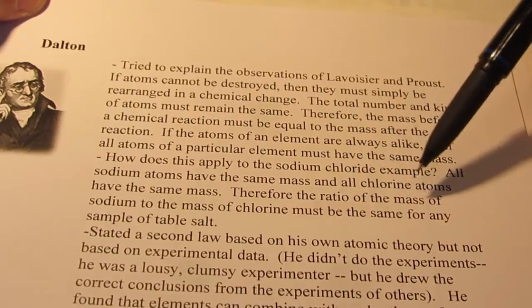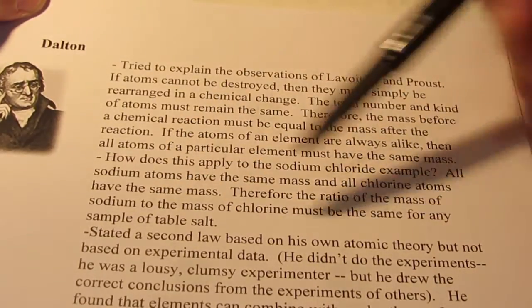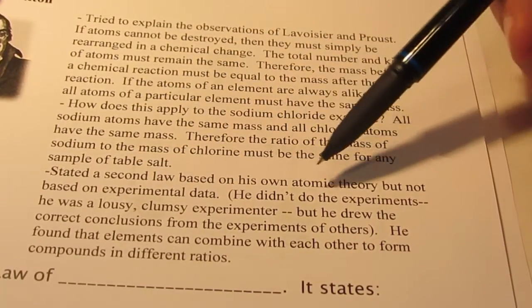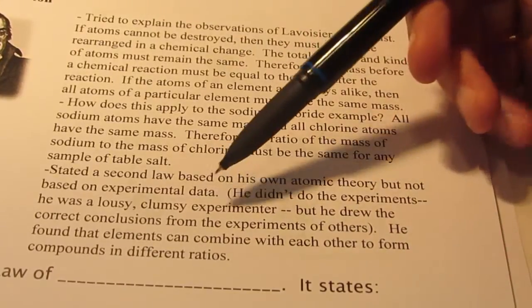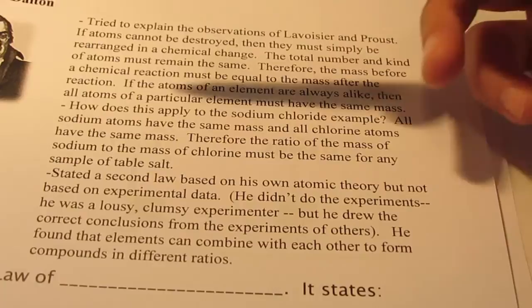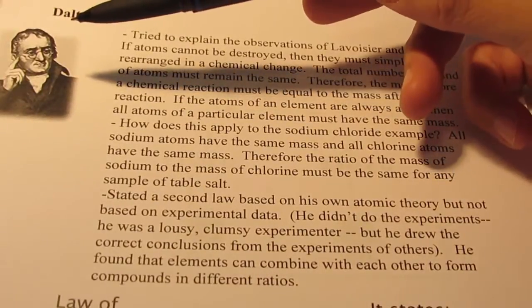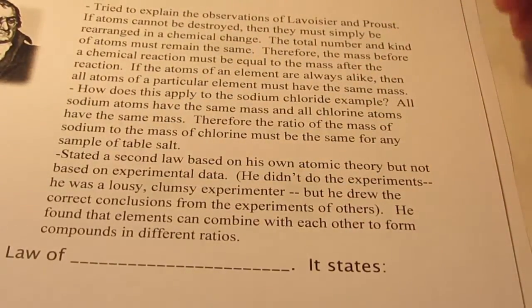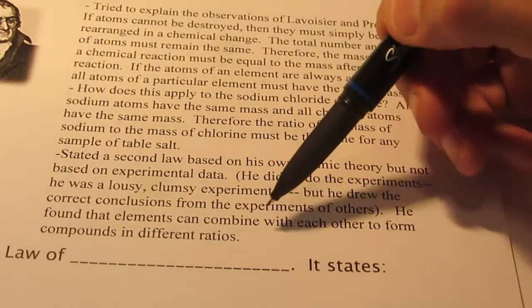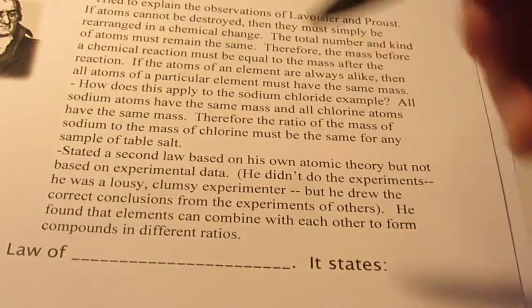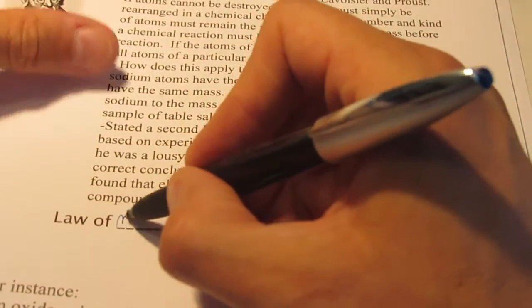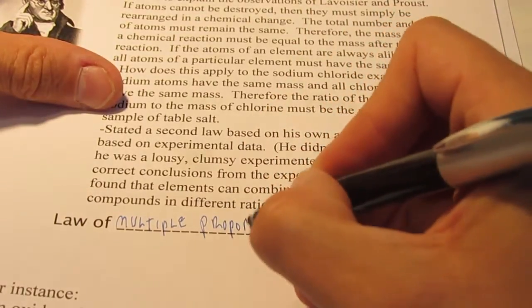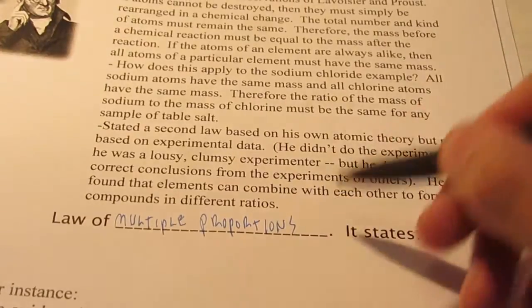Therefore, the ratio of the mass of sodium to the mass of chlorine must always be the same for any sample of table salt. He then stated a second law based on his own atomic theory, but not based on experimental data. He didn't do experiments himself. He was actually quite a clumsy person, as legend has it in the laboratory. But he did draw upon the correct conclusions from experiments of others. He found that elements can combine with each other to form compounds in different ratios. This became known as the law of multiple proportions.